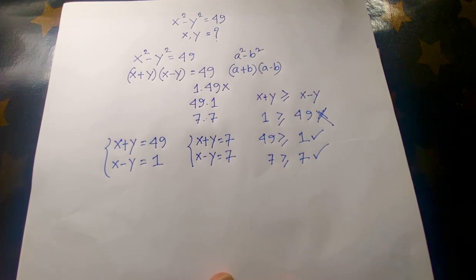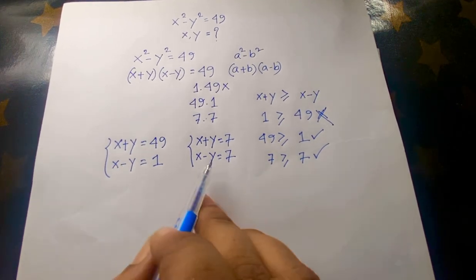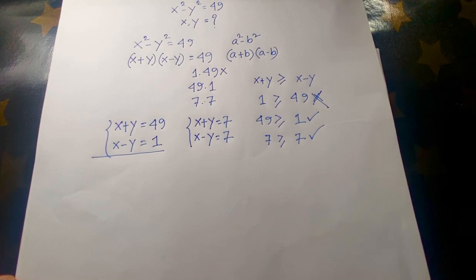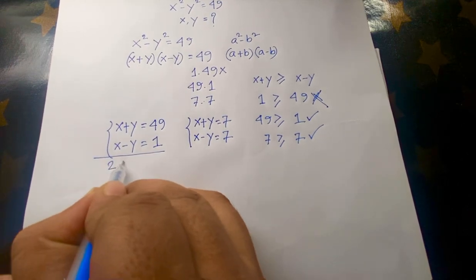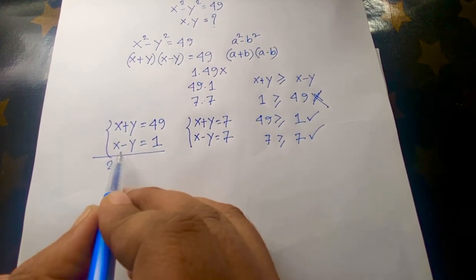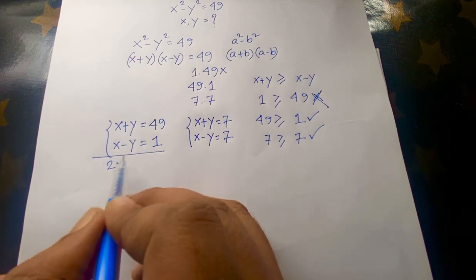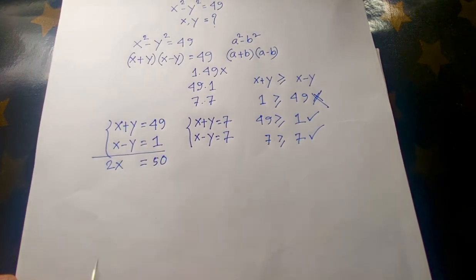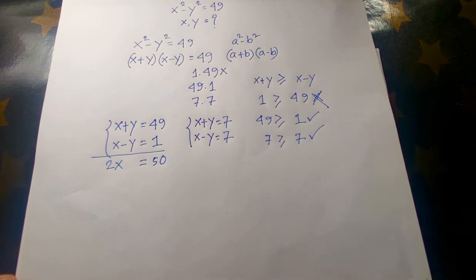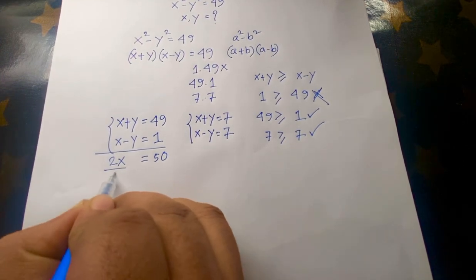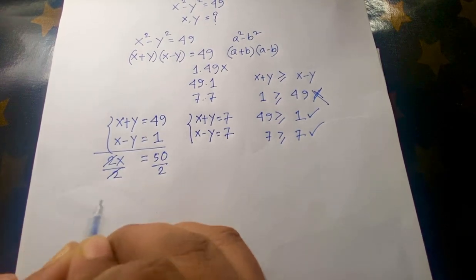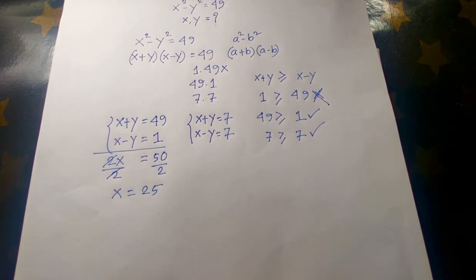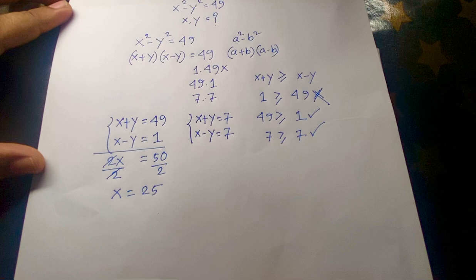For Case 1: x + y = 49 and x - y = 1. Adding both equations, the y terms cancel and we get 2x = 50. Dividing both sides by 2, we find x = 25.